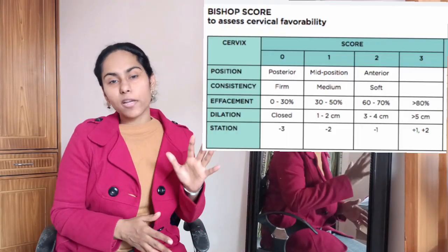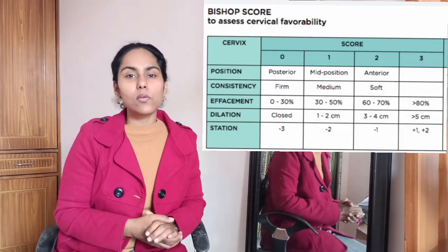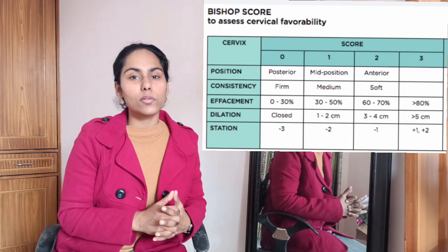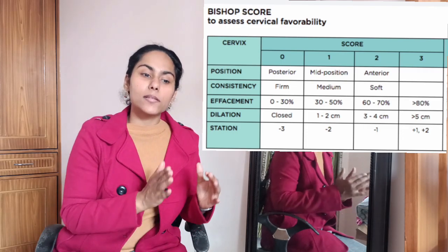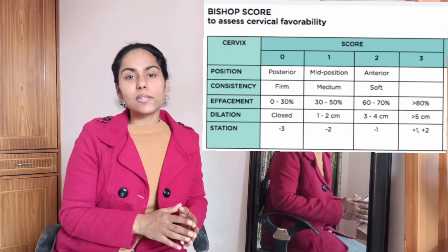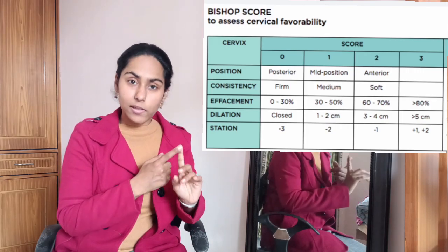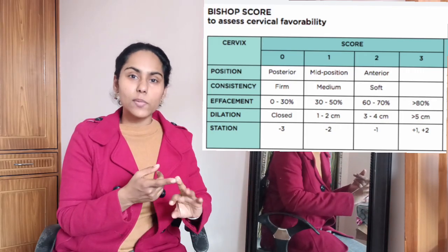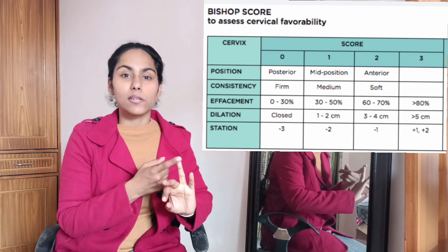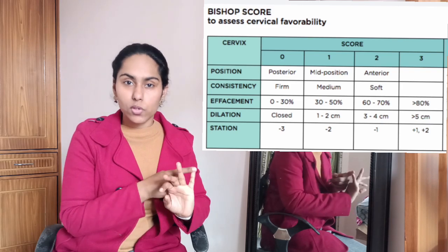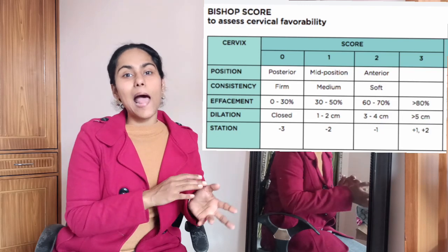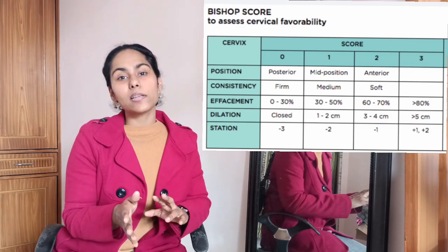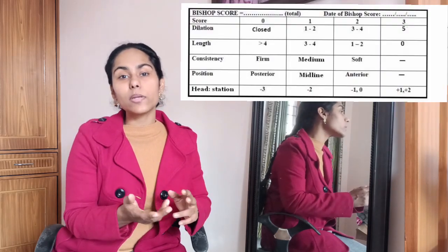The original Bishop score had five components: four cervical components and one for the fetal head station. The four cervical components are cervical dilatation, cervical effacement, cervical consistency, and cervical position.